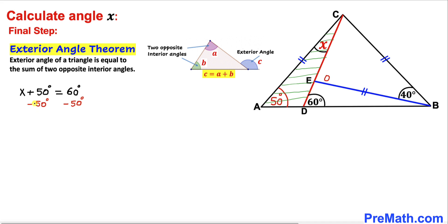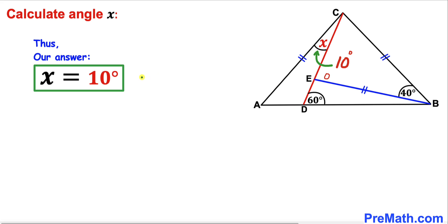Let's subtract 50 degrees from both sides. So we end up with X equal to 10 degrees. Therefore our angle X turns out to be 10 degrees. And that's our final answer.